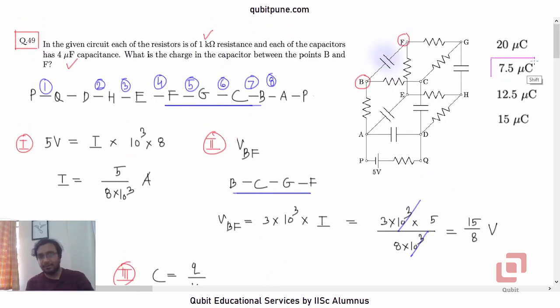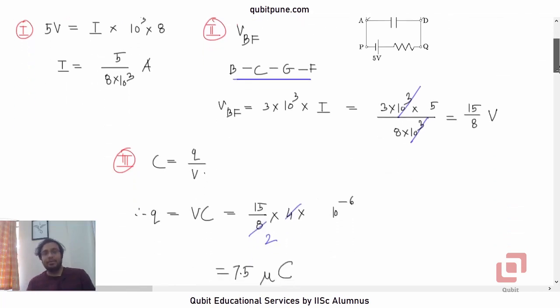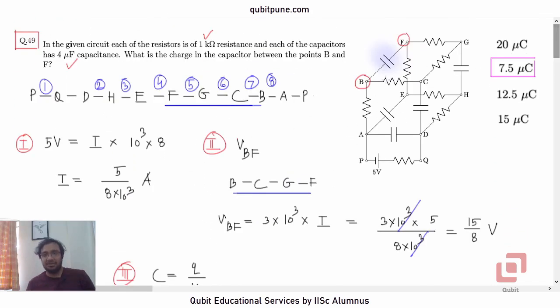So we had to first find this path and then we found out the current using Ohm's law. Using current we found out the potential difference IR, and then eventually we substituted that in the capacitance formula to calculate the net charge on the capacitor BF.